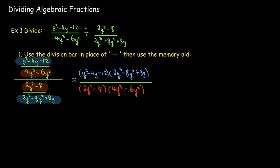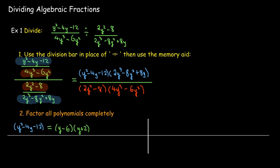I'm going to go ahead and factor everything completely. And I might have to think about that. Not the first one. Y squared minus 4y minus 12, that one is relatively easy. The 2y squared minus 8, first I take out the common factor, and then I'm left with the difference of two squares.